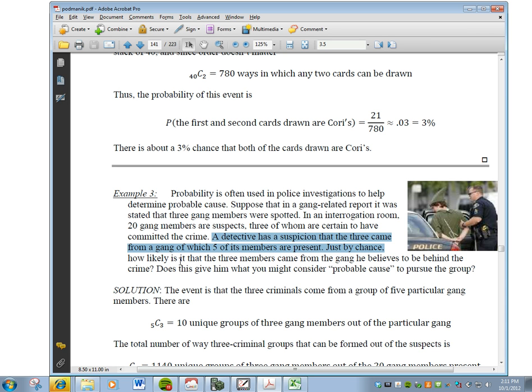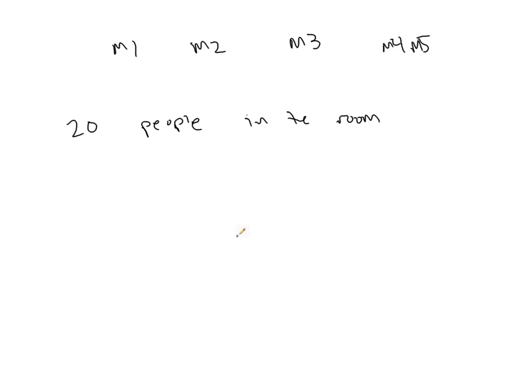How likely is it that the 3 members came from the gang he believes to be behind the crime? Well, the event is that the 3 criminals come from a group of 5 particular gang members. So, there are, in this case, 5 choose 3, because we don't really care what order these 3 gang members come in.